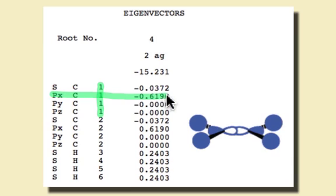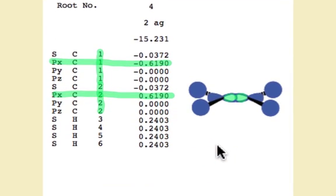Molecular orbital 4 has its dominant contributions on carbon from the 2px orbital, but notice that the sign on carbon 1 and 2 is opposite. How might we think about the sign of the 2px orbital?